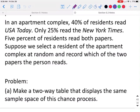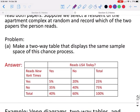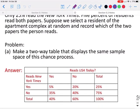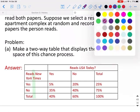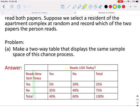We need to make a two-way table that displays the sample space of this chance process. So if we make a table, we have people who read the New York Times. They can either yes read it, no read it, or total. We also have people who read USA Today. And again, yes they can read it, no they don't read it, or total.